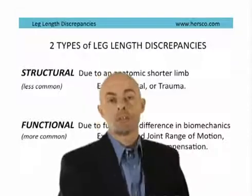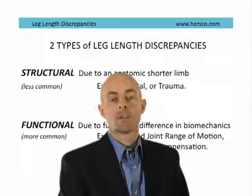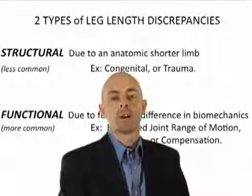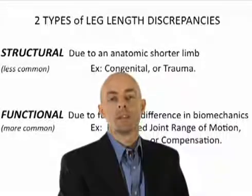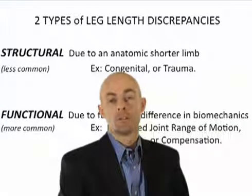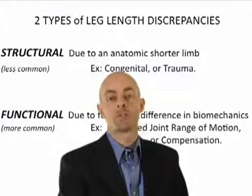There are two categories of leg length discrepancies. The first is structural — this is where the limb is actually physically shorter. It can be due to congenital deformities, trauma, or even post-surgical causes.